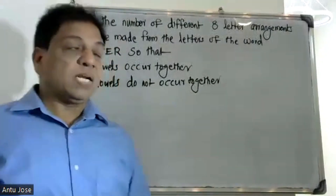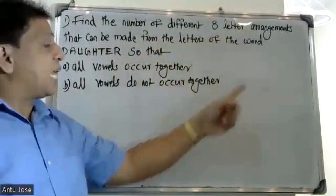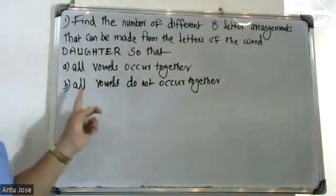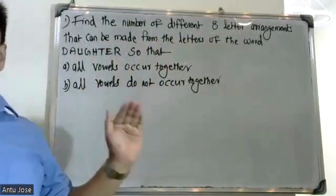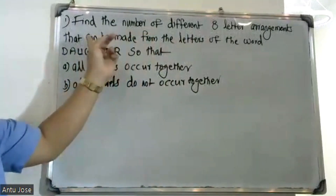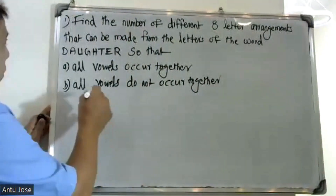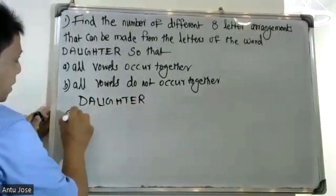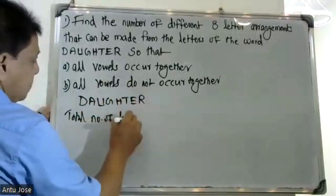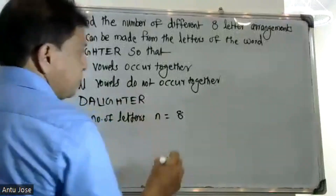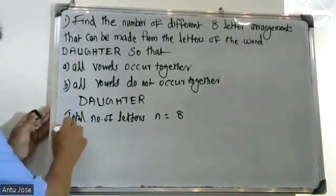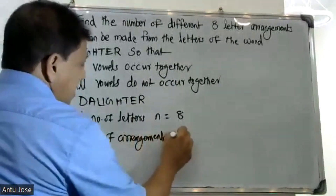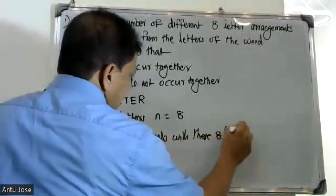Good morning students. The question asks: find the number of different eight-letter arrangements that can be made from the letters of the word DAUGHTER, so that all vowels occur together, and all vowels do not occur together. The total number of letters in DAUGHTER — D, A, U, G, H, T, E, R — is 8. Total number of arrangements with these eight letters, n is equal to 8 factorial.